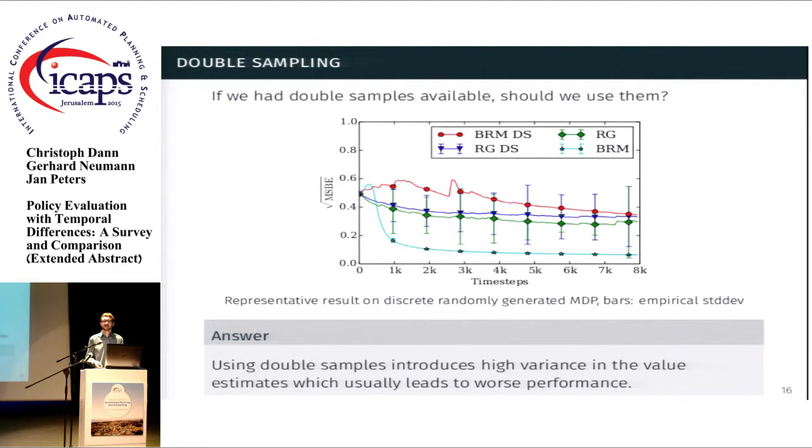But even if it is available and you use it, the results here actually show that it's beneficial just to ignore it and simply go with the biased one-sample version. So here we compare two different algorithms, Bellman residual minimization and residual gradient for the one-sample version and the double-sample version, indicated by the suffix DS. And we see that the one-sample versions converge much quicker than the double-sampling versions, which is quite non-intuitive because we use additional samples and additional information in the double-sampling methods.